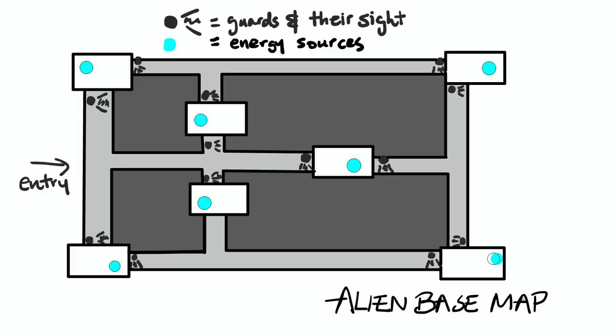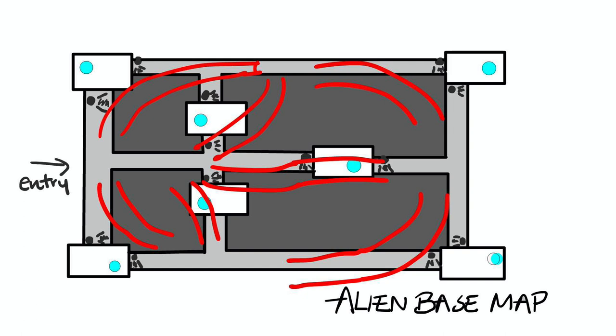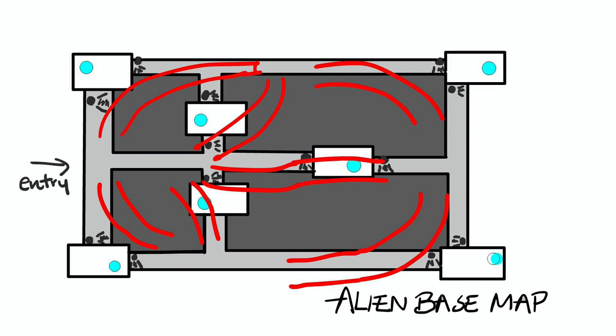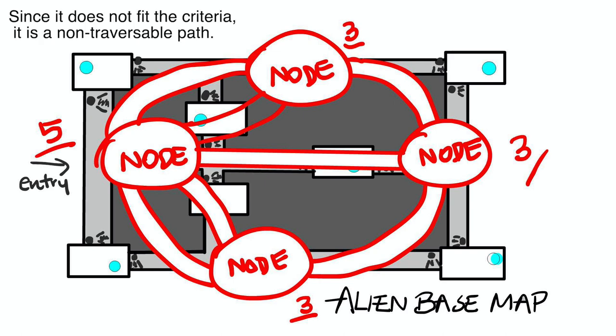If we go back to the alien base, we can actually think of the rooms as the edges, because you can only cross them once, and the corridors as nodes. Then we can find the degree of each node by counting how many rooms each corridor connects to. The alien base cannot be stolen from, and we won't be able to get a sufficient number of energy sources to win the fight.